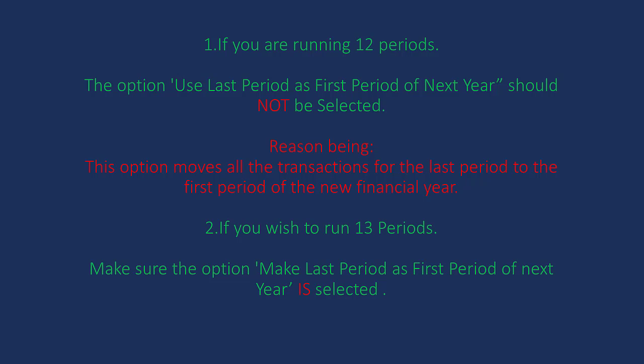For example, in a 12-period scenario whereby your financial year starts in March 2020 and ends in February 2021, if you have the option 'Make last period as first period of next year' ticked, February 2021 will be the first period of the new financial year. On the contrary, if you do have the 13th period, where your year runs from March 2020 to March 2021, and you have not ticked 'Make last period as first period of next year', your April 2021 period will be the first period of the new financial year.